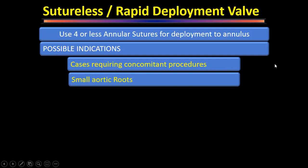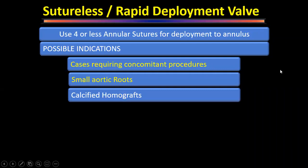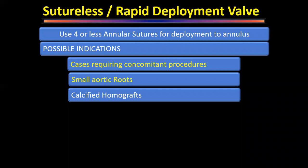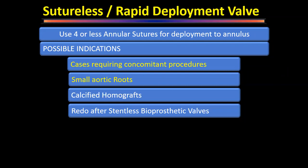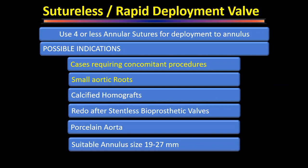Another strong indication for rapid deployment valves is redo surgery in patients with a calcified homograft — a child who received a homograft that has now calcified and been outgrown. Excising the leaflets and implanting a rapid deployment valve becomes straightforward. Similarly indicated for redo surgery generally, and for porcelain aorta. One restriction: suitable annular size is 19 to 27 mm — if less than 19 or more than 27 mm, sutureless valves are not available.